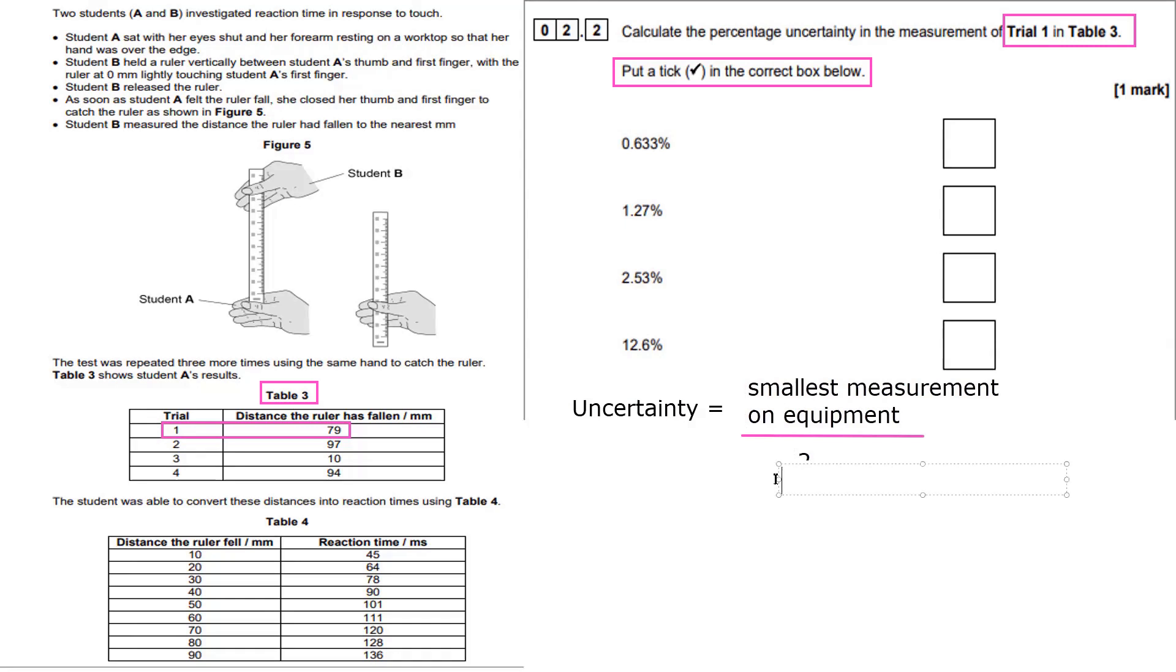How you calculate uncertainty is by taking the smallest measurement on the equipment and dividing by 2. Now they're using a millimeter, well they're using a meter ruler, but the smallest measurements are millimeters. So 1 millimeter divided by 2 equals 0.5. So 0.5 is the uncertainty in this measurement.